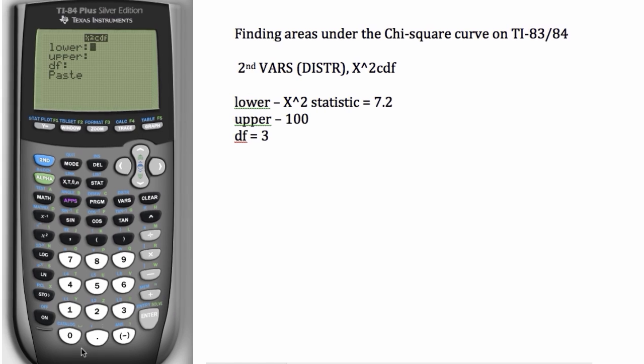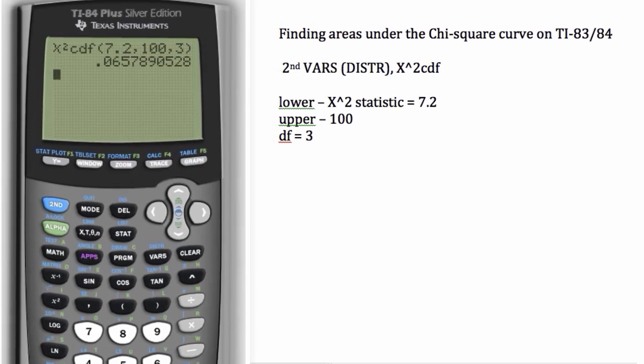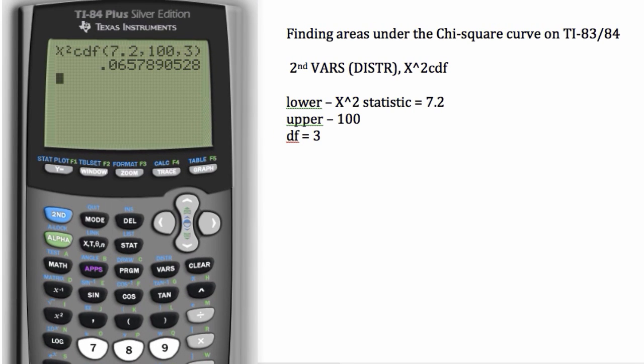So here we'll enter 7.2 for the lower endpoint, 100 for the upper endpoint. This will give us the right-hand tail with 3 degrees of freedom. And then we'll hit enter for paste, and then enter again. So we get about 6.6% of the area is in that right tail.